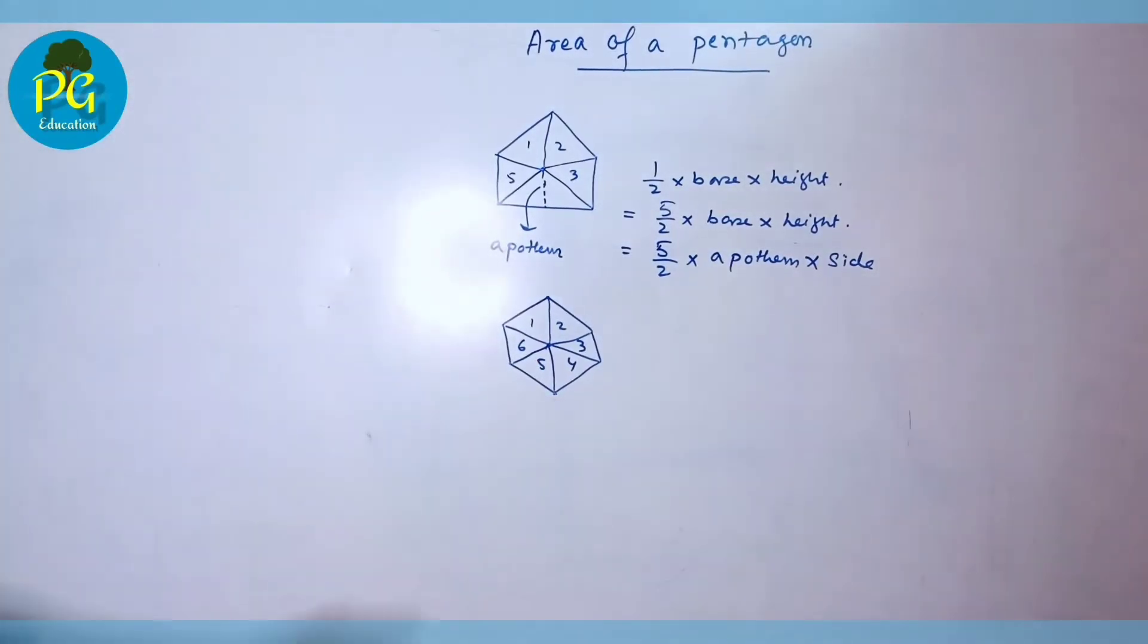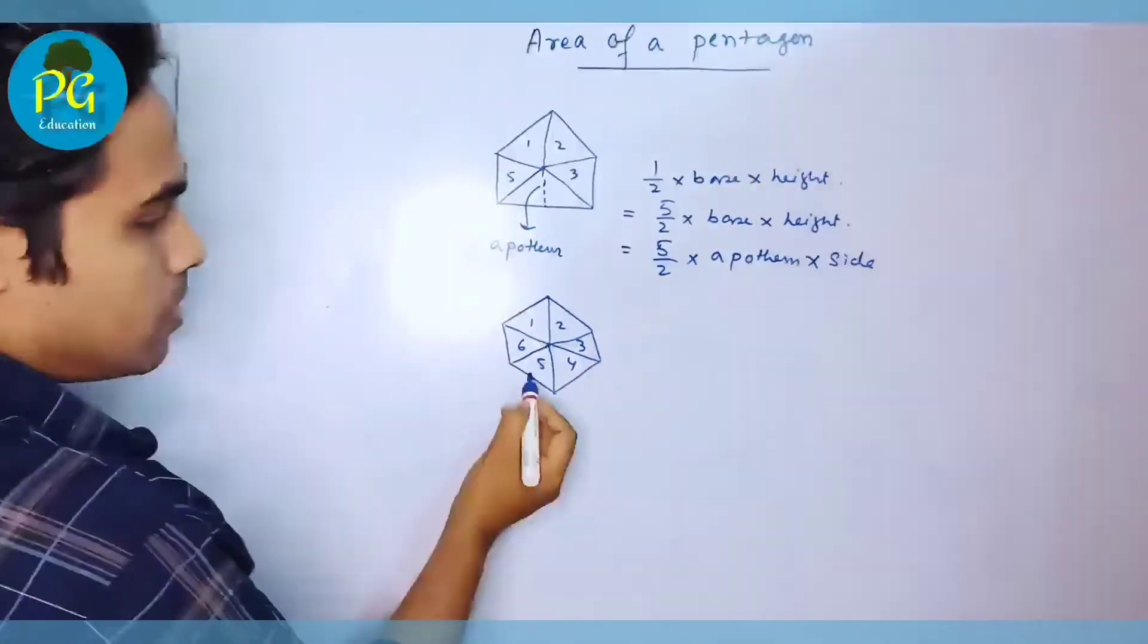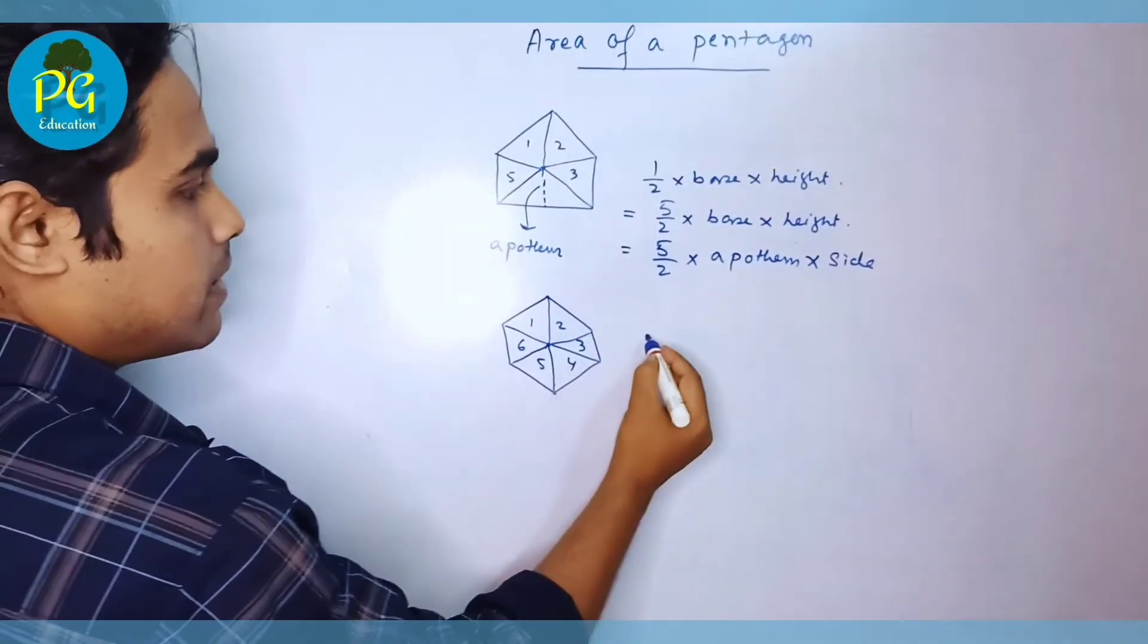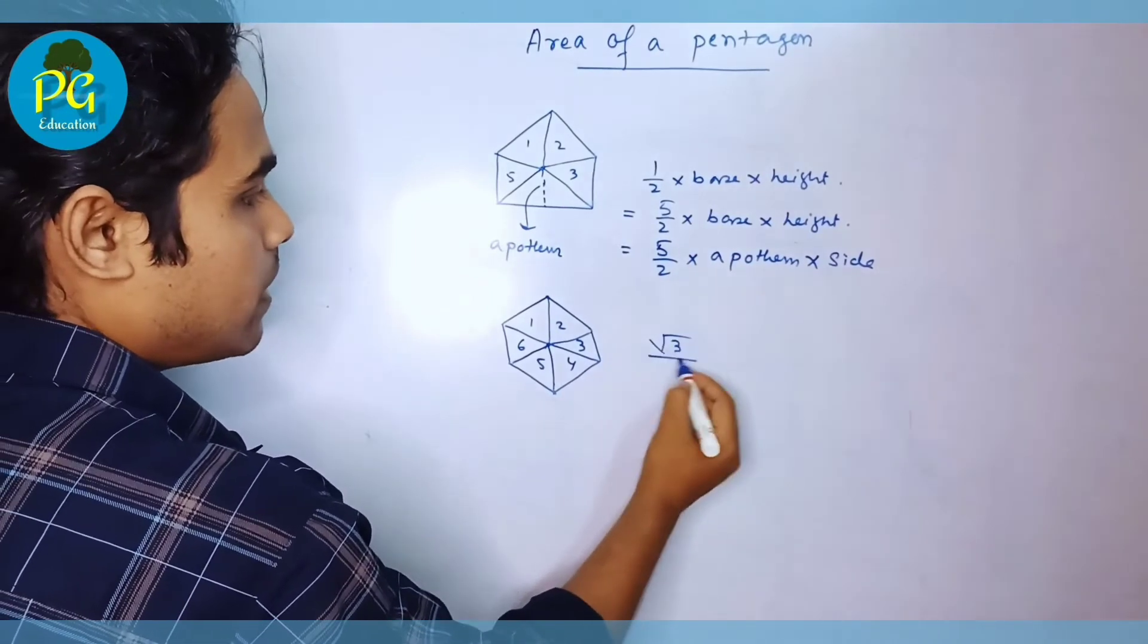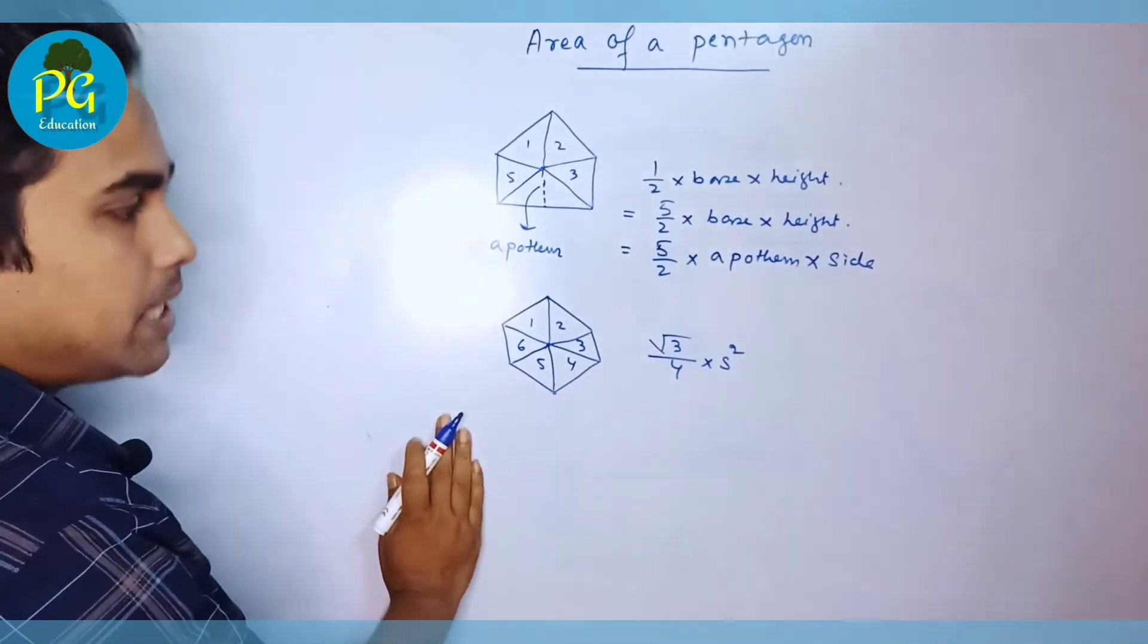Okay. And each triangle is an equilateral triangle. So area of a single triangle is root three by four into side square because each triangle is an equilateral triangle.